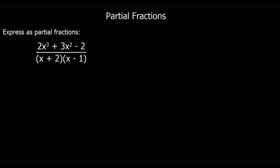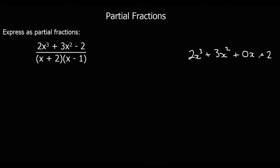Here's another question. This time we've got a cubic on the top and a quadratic on the bottom, so again it's top-heavy and improper. We need to do the extra step of dividing the numerator by the denominator first. So we've got 2x cubed plus 3x squared — we've got no x terms, so we write 2x cubed, 3x squared, 0x, minus 2.